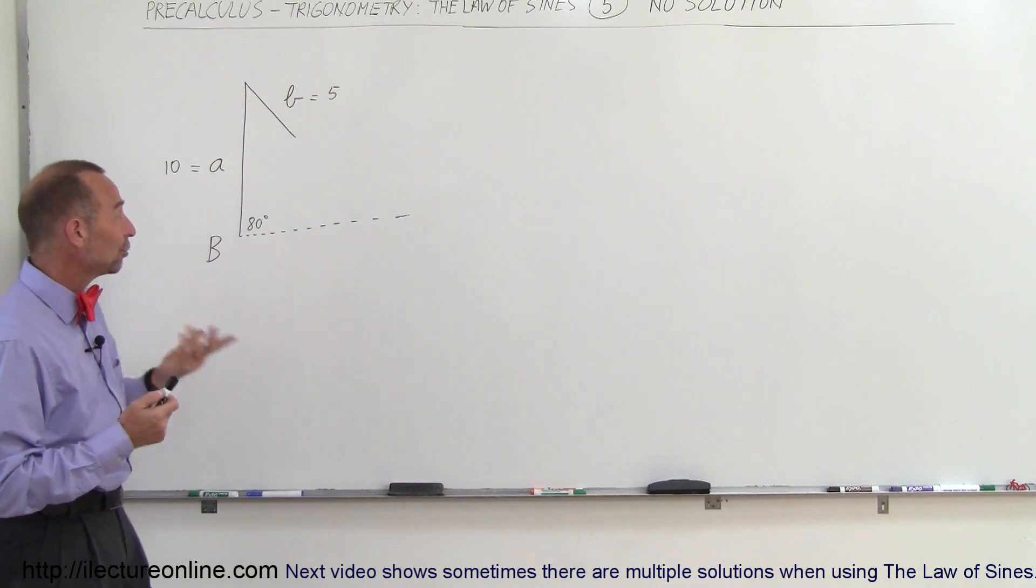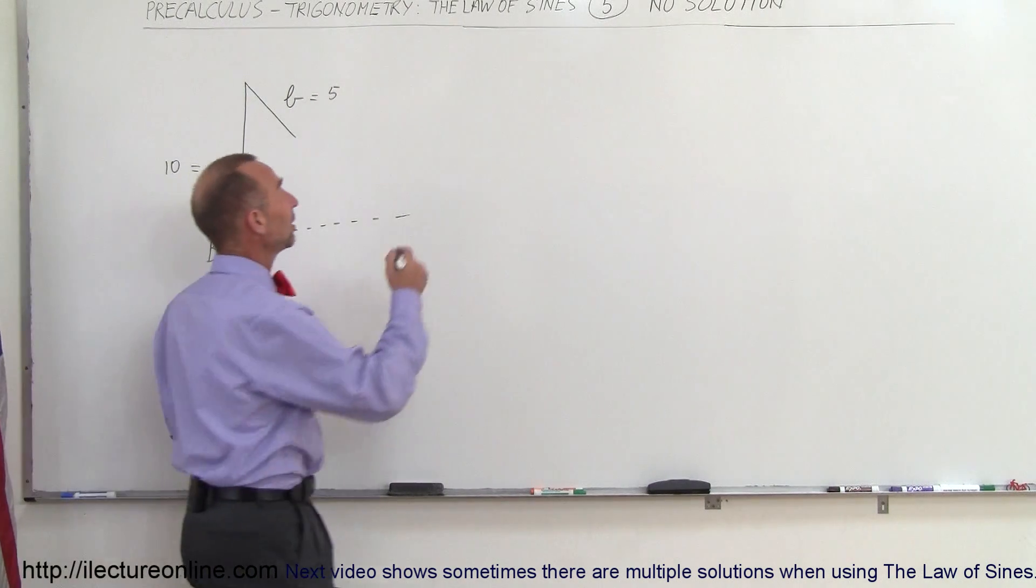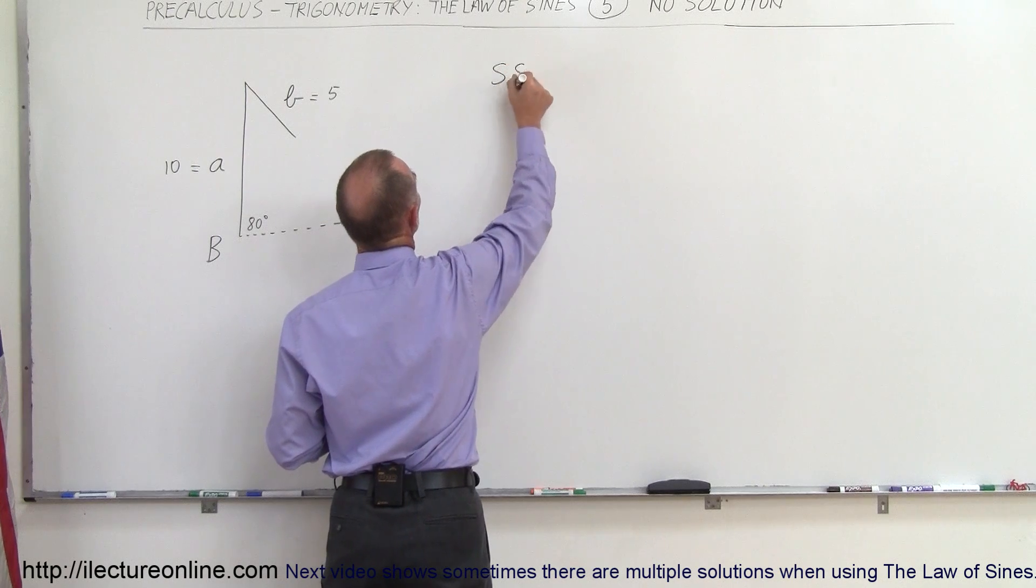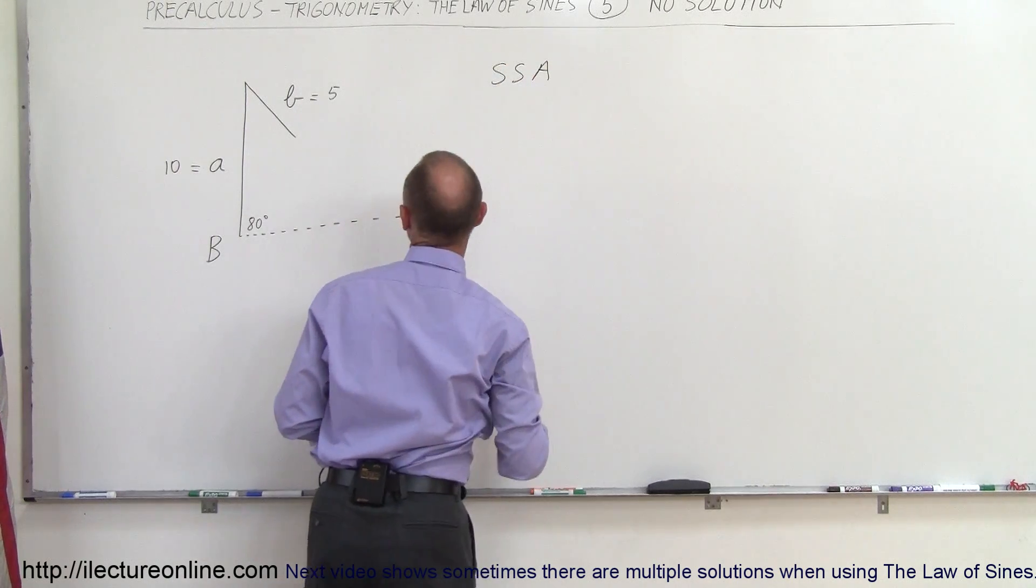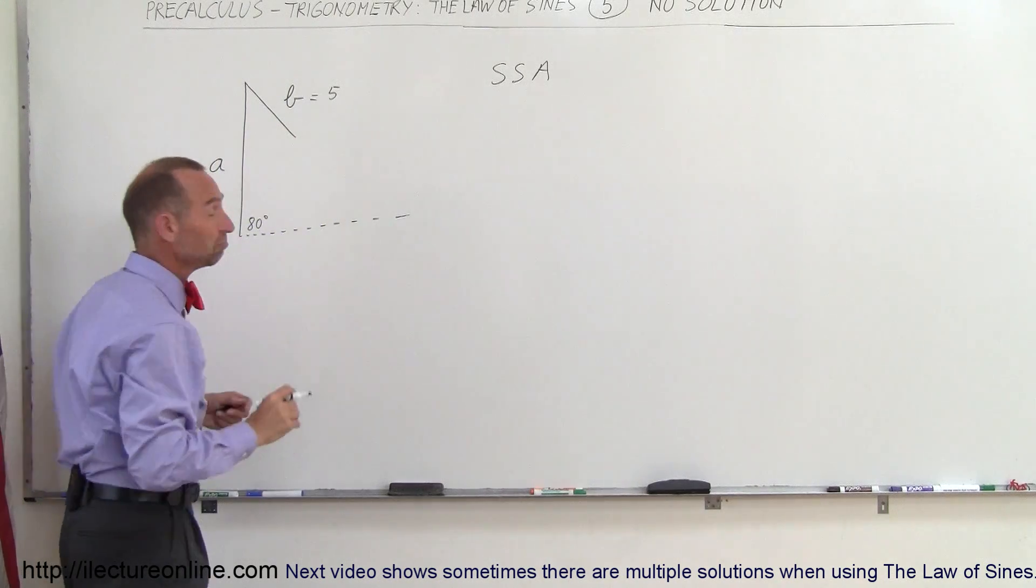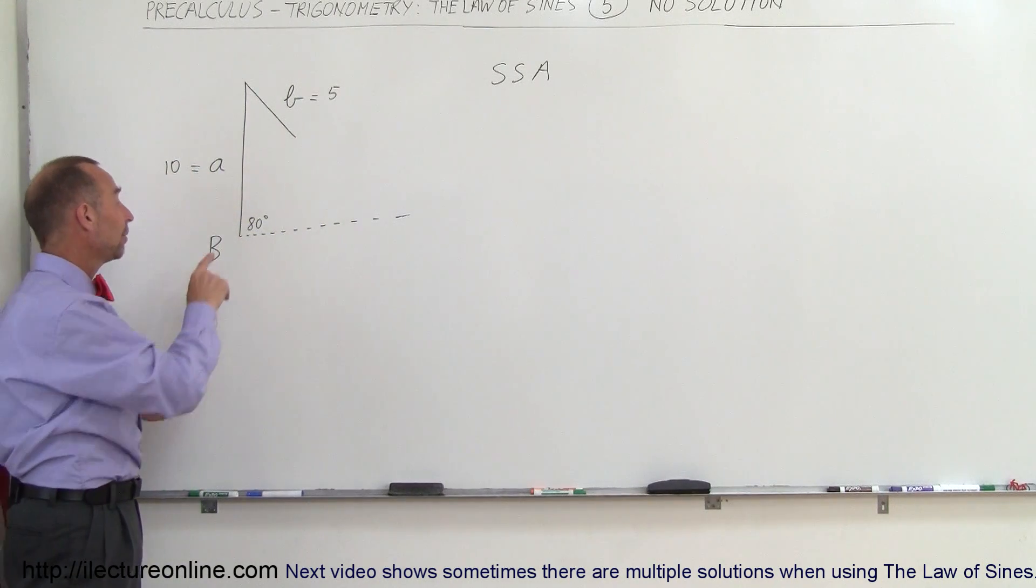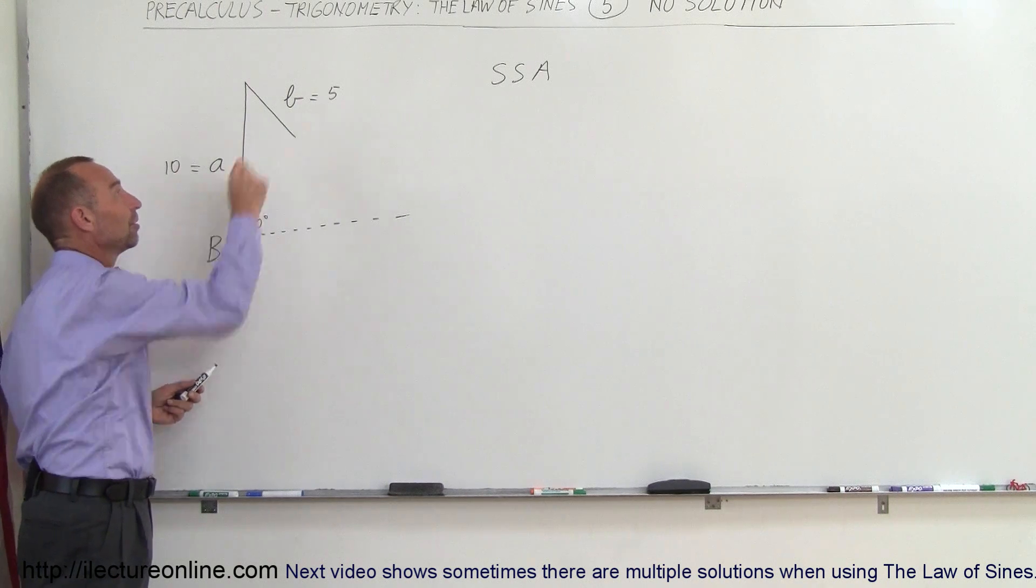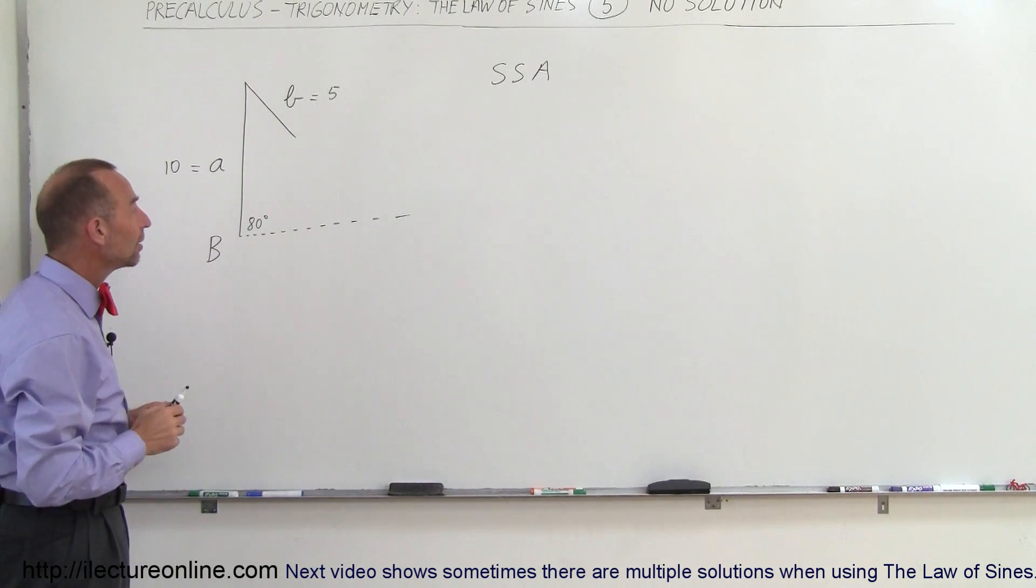So let's say they give you two sides and an angle. We have a side-side-angle situation, and they tell you that side B is 5 and side A is 10. So far not a problem. And then they tell you that angle B, opposite of B here, is 80 degrees.